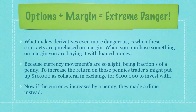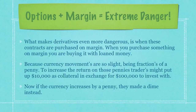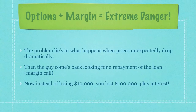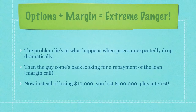When you combine options with margin, we're talking about extreme danger. What makes derivatives even more dangerous is when those contracts are purchased on margin — buying with loaned money. Because currency movements are so slight, being fractions of a penny, traders might put up $10,000 as collateral in exchange for $100,000 to invest with. This is called buying on margin. If the currency increases by a penny, they made a dime instead. The problem lies in what happens when prices unexpectedly drop dramatically — the lender comes back looking for repayment, being a margin call. Instead of losing $10,000, you've lost $100,000 plus interest. This actually happened with a company called Long-Term Capital Management back in the 80s and nearly caused a global collapse of the financial system, and most people don't even know that existed.